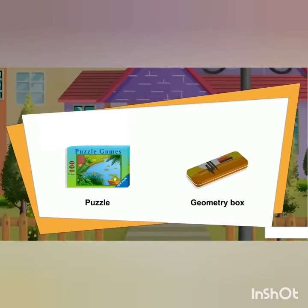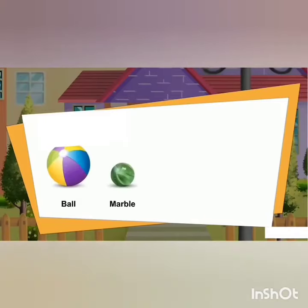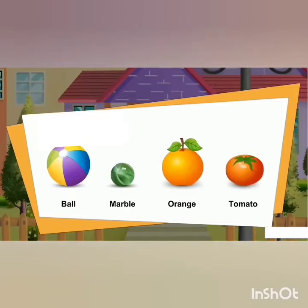A sphere can roll only because it has a curved surface. For example, a ball, marble, orange, and tomato — these are examples of a sphere.